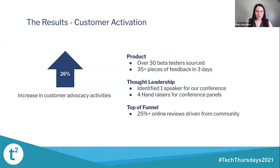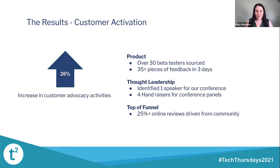In results for customer activation, since Q4 we've seen a 26% increase in advocacy activities. While some of these are incentivized by our CSMs, our community has been a big driving force as well. We're really proud to say we've been able to help all departments in our organization. Looking at product, we sourced over 30 beta testers in just the past couple months and had to put a cap on it because so many people were opting in. Previously, product found it fairly difficult to get product feedback — we put a post in the community that got over 35 pieces of feedback in just three days.